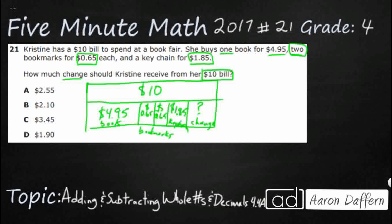So the book, the bookmarks, the keychain, plus the change all add up to $10. When we've got this part-part-whole, we can subtract, but we first need to get what we'll call a subtotal. Subtotal means we need to add up all the things that she spent money on to see how much money she spent. We don't know that yet — we just know it in little pieces. So let's add that up and make sure we line everything up correctly. We've got $4.95, then $0.65 twice because there are two bookmarks at $0.65 each, and then $1.85 for the keychain.